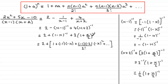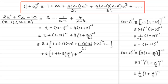The third term is plus 2 times the expansion of (1 plus x/2) to the power minus 1. Here a equals x/2 and n equals minus 1. So we get 1 plus (−1)(x/2) plus (−1)(−2)/2! times (x/2) squared, plus and so on.